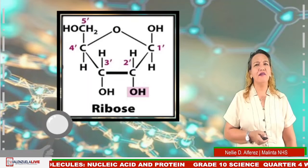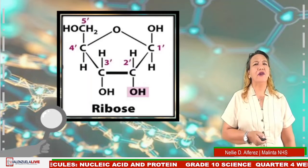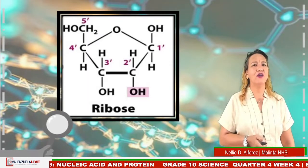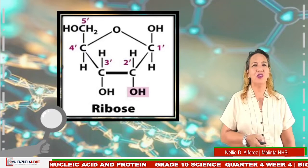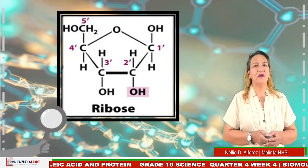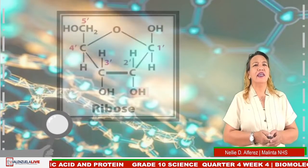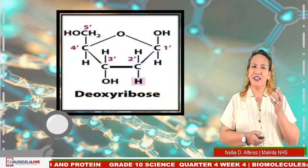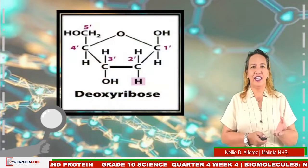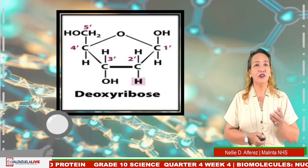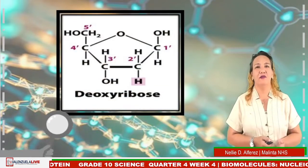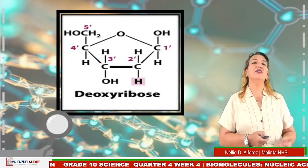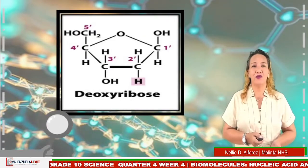Now comparing the chemical structure of deoxyribose, the only major difference is at carbon number two. Instead of a hydroxyl group, it contains only a hydrogen atom, and the resulting sugar is called deoxyribose.